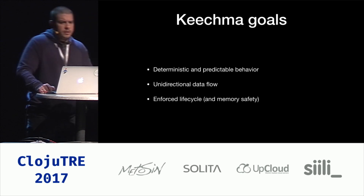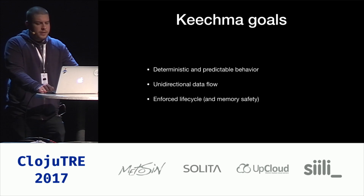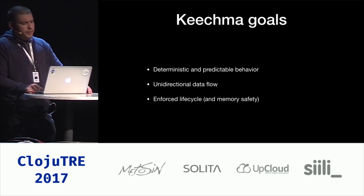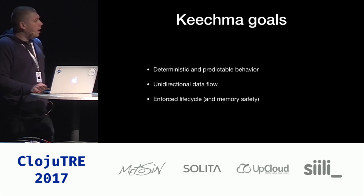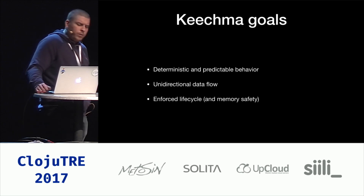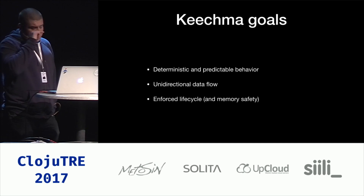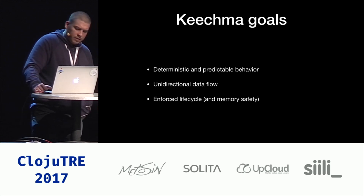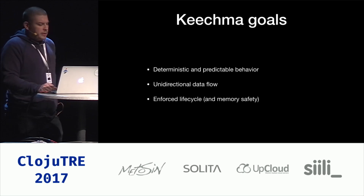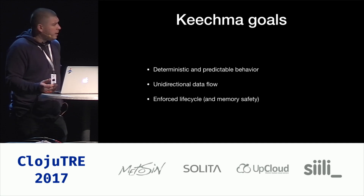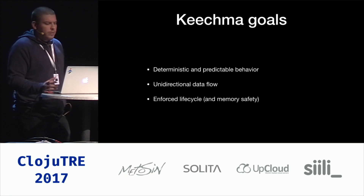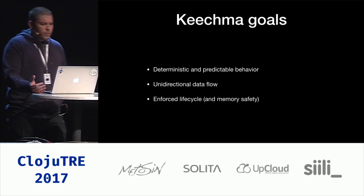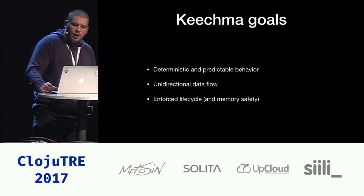First of all, I wanted applications to be deterministic and predictable. In Kitchma, that means that based on your URL and your route, you can easily determine what is going to be the content of your application state. I also wanted to ensure unidirectional data flow in a very strict manner — avoiding a situation where a component would be mounted and then require some data from the server, which is a pattern pretty often seen in React apps. And I wanted to enable apps to have enforced lifecycle and memory safety, which is something not maybe so important today as it was five years ago when IE6 was the main browser.